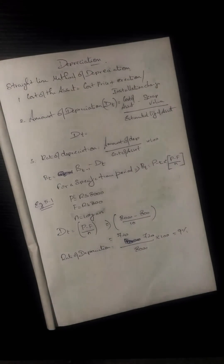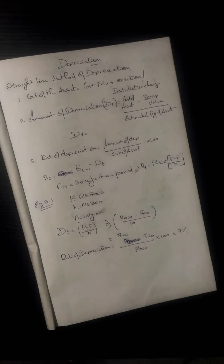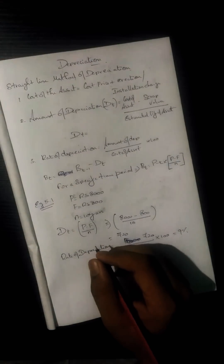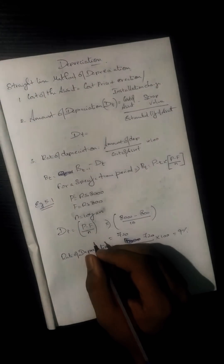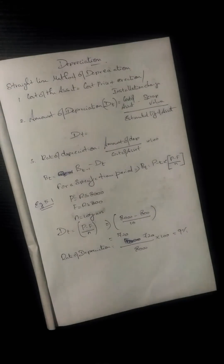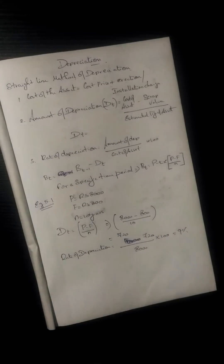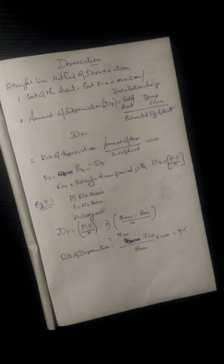Next is lapse of time. Suppose the time period passes — the value of an asset goes down whether it is utilized or not. Some intangible fixed assets decrease in value as time lapses. So over time, the value and performance of the machine decreases — that's depreciation.